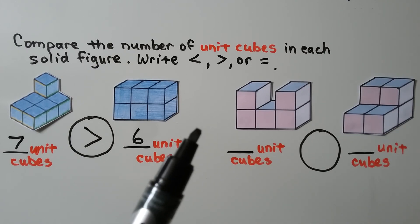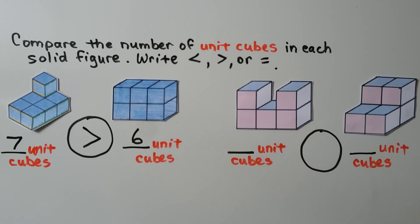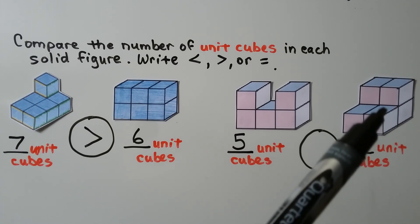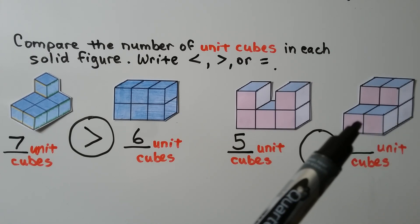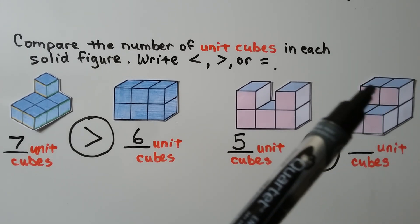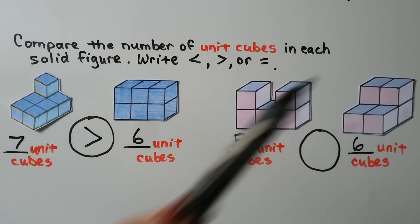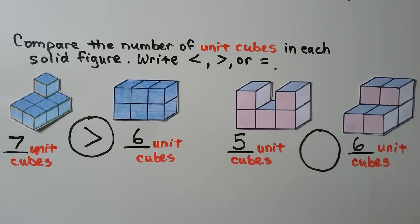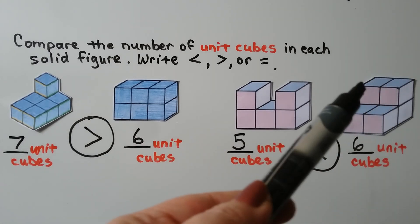How many unit cubes can you count here? I see five unit cubes. And how many are in this figure? Some are hiding — there are two in the front and there must be two in the back holding the top ones up. So that's four on the first layer and two on the second layer, totaling six unit cubes. Five is less than six. Be careful when counting — if a cube isn't showing, you know it's there because it's holding another one up.